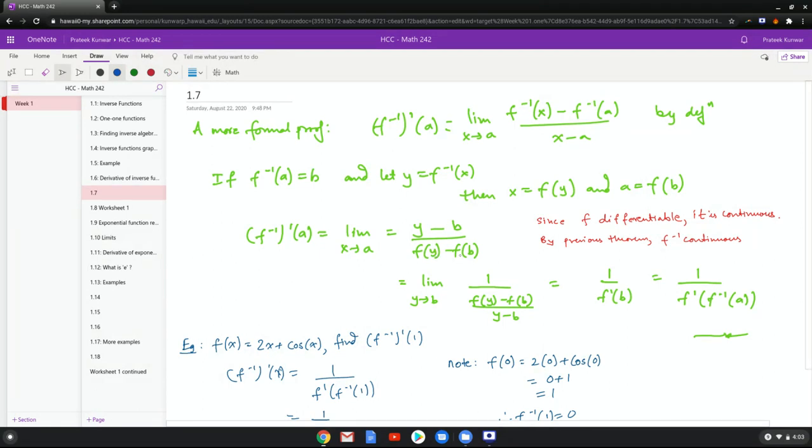Since f is differentiable it is continuous, and by the previous theorem that we just saw, f inverse is also continuous. So I can divide by y minus b and I make this fraction down here, which you recall, f of y minus f of b over y minus b, is the precise definition of the derivative at b, which gives us back the expression that the formula was telling us.